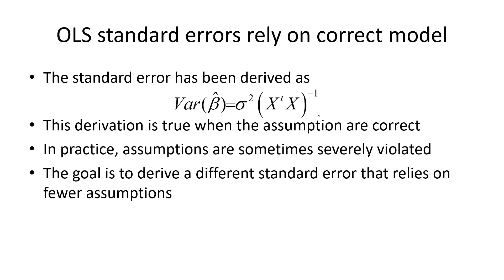Our goal today is to find an alternate estimate of the variance of beta that does not rely on the model, which is true even when the assumptions are incorrect.